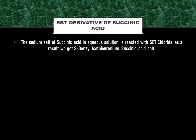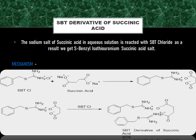Now we will jump into the main reaction — preparing the SBT derivative of succinic acid. First of all, we should know that SBT chloride reacts with the sodium salt of carboxylic acid, not just the free carboxylic acid. So the sodium salt of succinic acid in aqueous solution is reacted with SBT chloride. As a result, we get S-benzyl isothiouronium succinic acid salt. Here is the mechanism.